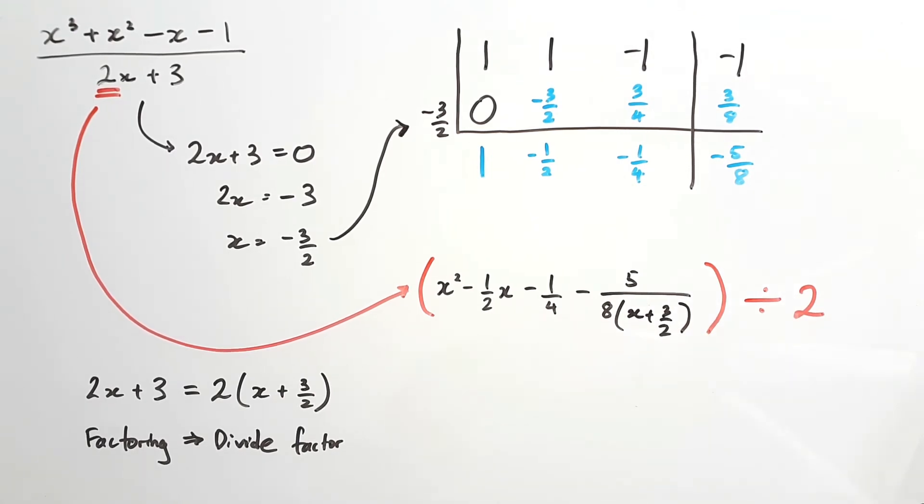It's a temporary divisor. Now when you divide everything by 2, we'll end up with x squared on 2 minus x on 4 minus 1 on 8, minus 5 on 8 times 2x plus 3. So that temporary divisor goes back to being what it used to be, 2x plus 3, and you simply put the 8 next to that as a factor.